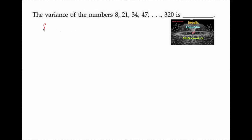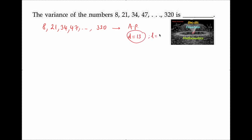We need to find the variance of the numbers 8, 21, 34, 47, and so on; the last number is 320. We can say that they are in arithmetic progression with common difference 13. The last term is 320 and the first term is 8.